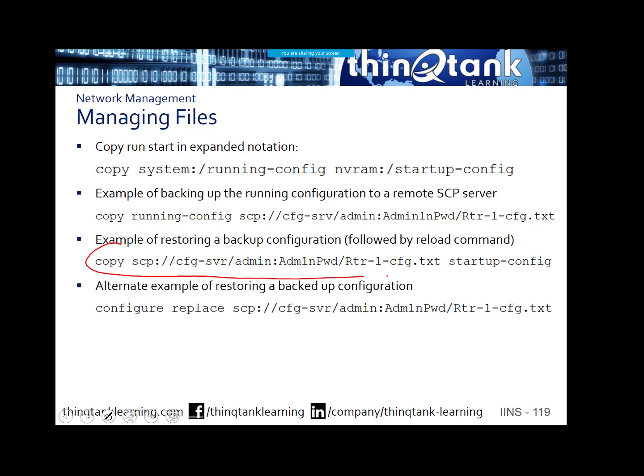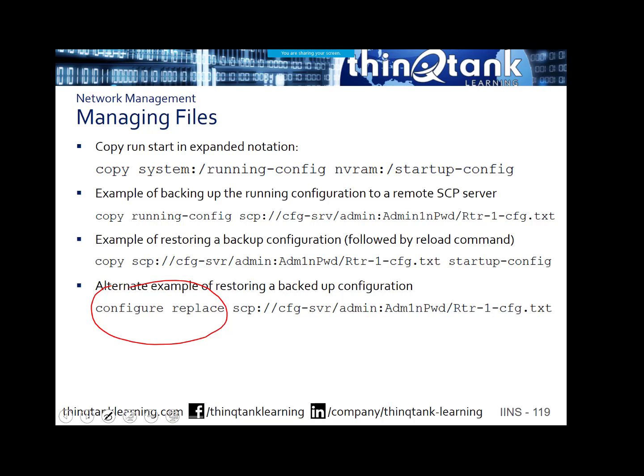Here, I'm taking a file from an SCP server and making it my startup config. One of the other important things to understand is when you're copying files to your running config — whether it's copy tftp run, copy start run, or copy scp run — whenever you're copying files to your running config, it always merges that configuration instead of replacing it. So if I do a copy tftp run, it's going to take the file from the TFTP server and merge it with the file on the device. We use the configure replace option if we're ever trying to change our running config.